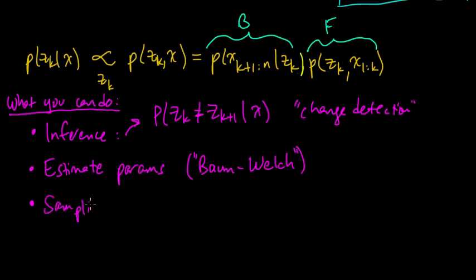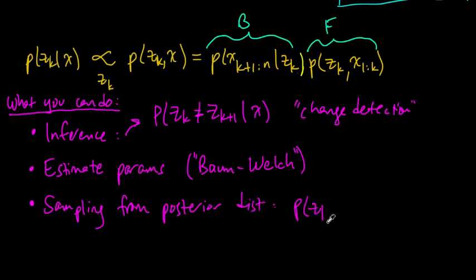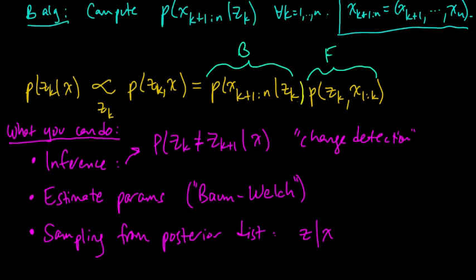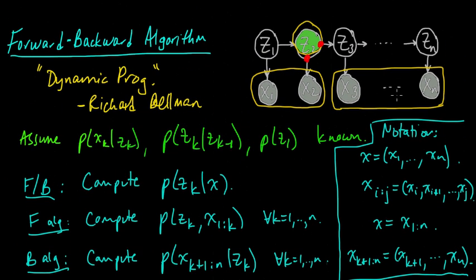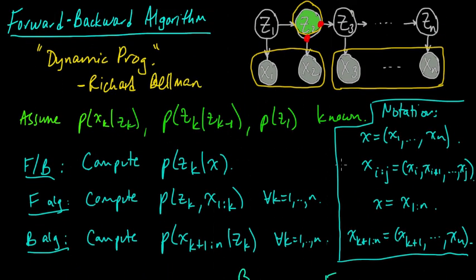Another thing you can do after completing the forward-backward algorithm is sample from the posterior distribution on the Z's given the X's. This is useful for visualizing possible interpretations of data — for instance, handwritten letters or digits. You could also get the single most likely sequence of hidden states; that's called the Viterbi algorithm, which we'll talk about later. Next, we'll take a look at how to compute these quantities using the forward and backward algorithms.